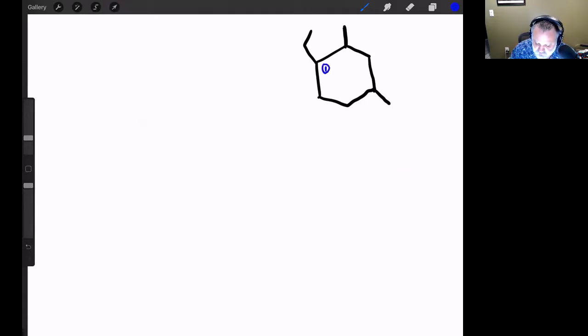The lowest set would be one, two, four. If I start at this carbon, I could go one, two, three, four, five. That's not better. Or I could go one, two, three, four, five, six. That's not better. So it's not an alphabetical choice, it's just the lowest set of values.